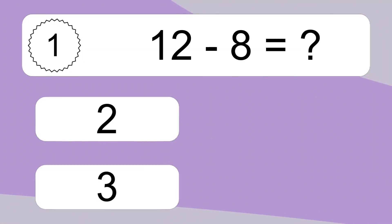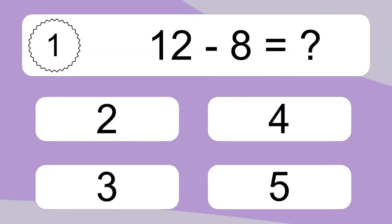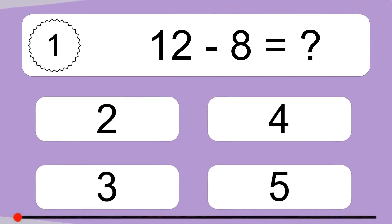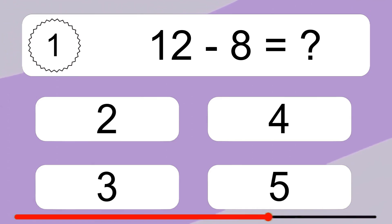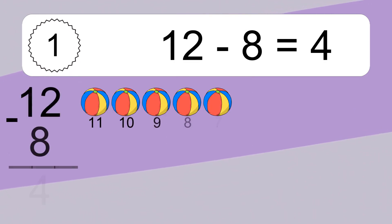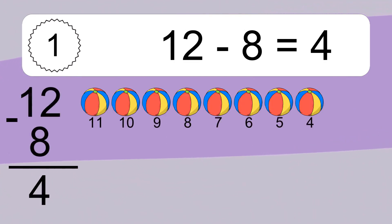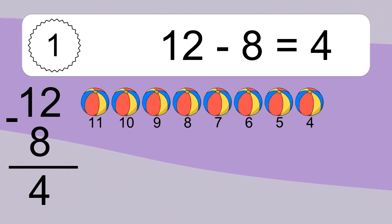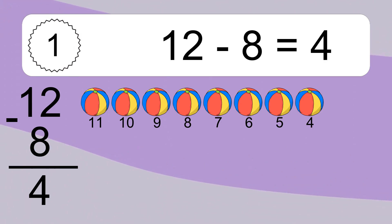12 minus 8 equals what? 12 minus 8 equals 4. Let's count it: 11, 10, 9, 8, 7, 6, 5, 4.